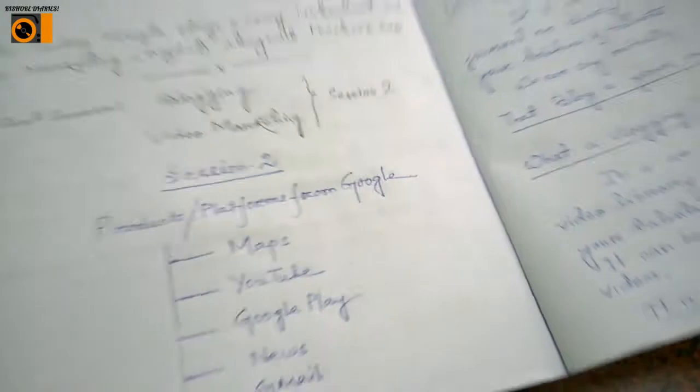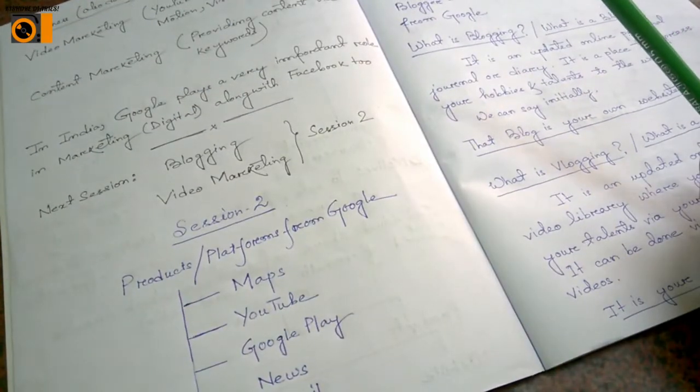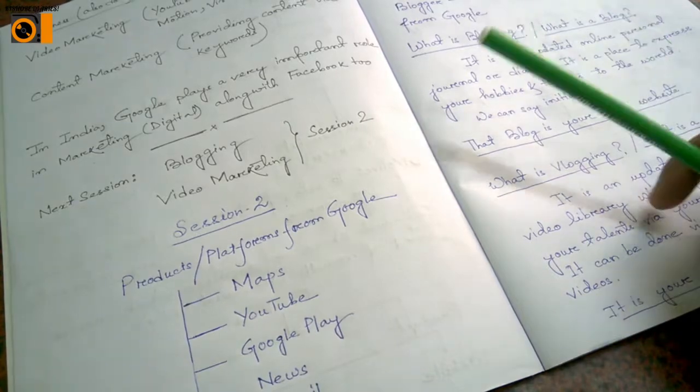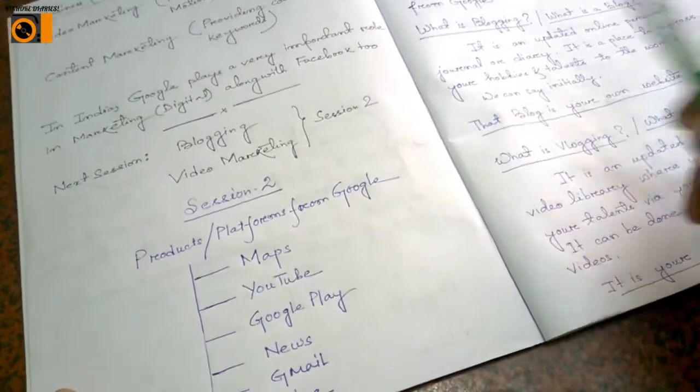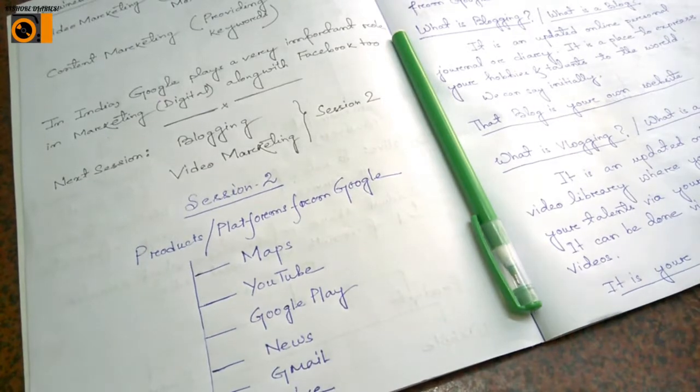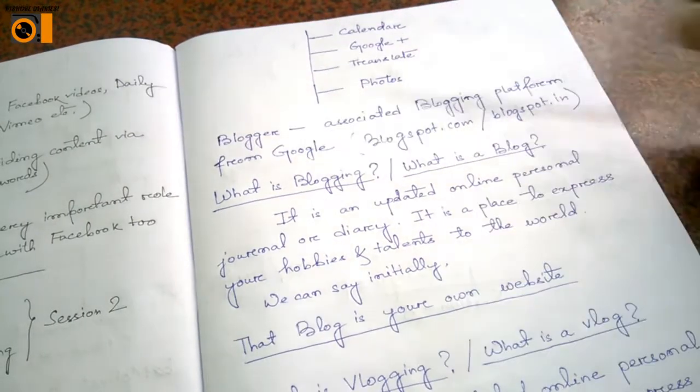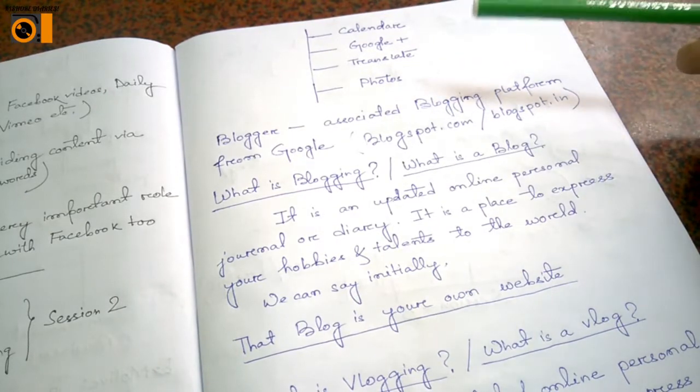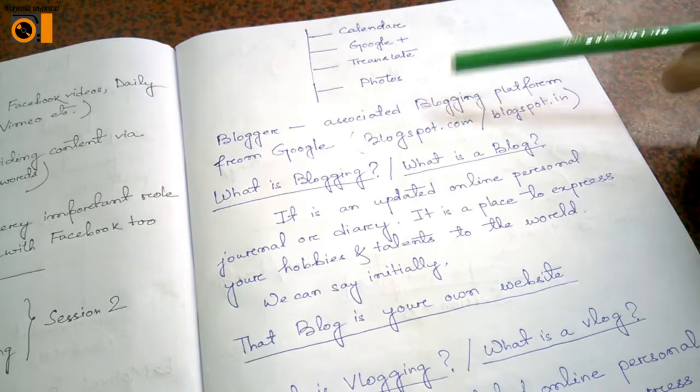There is Google Translate and Google Photos. These are the platforms provided by Google which we can use in our day-to-day purpose. Comment in the comment section below which of these stuffs you are using presently from Google.